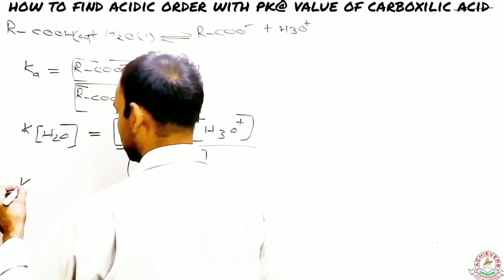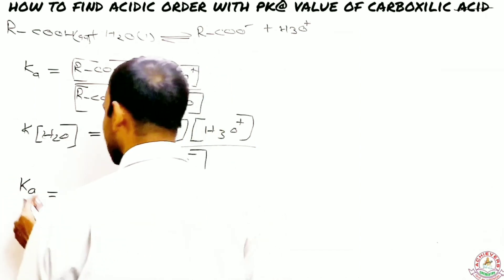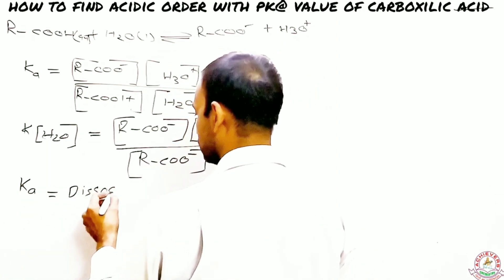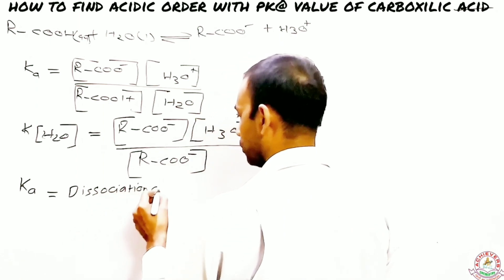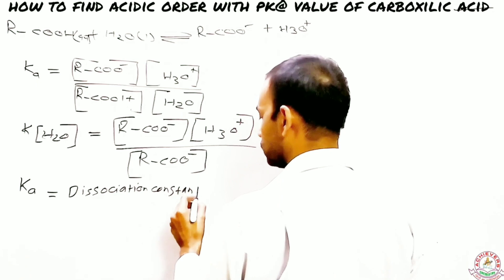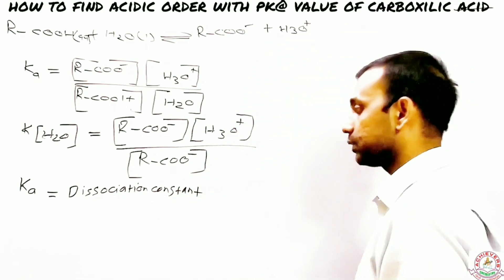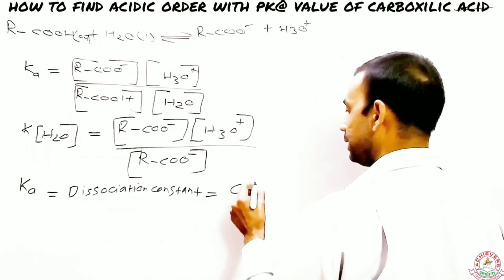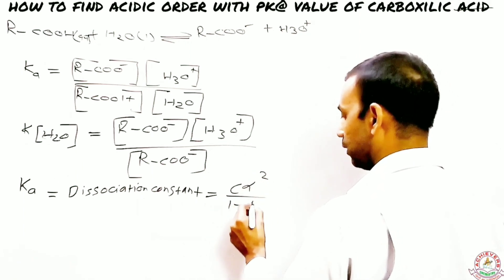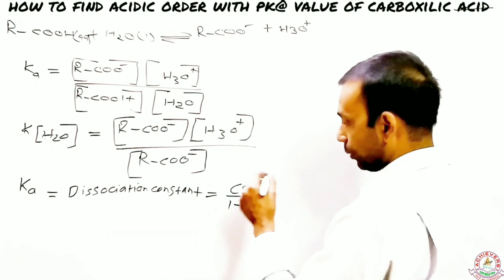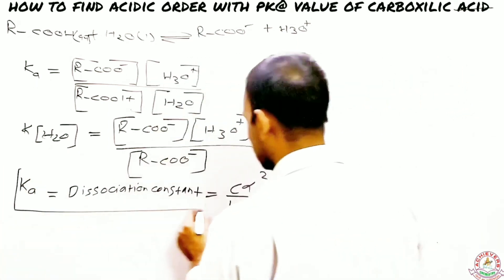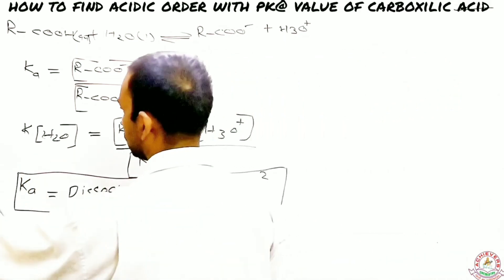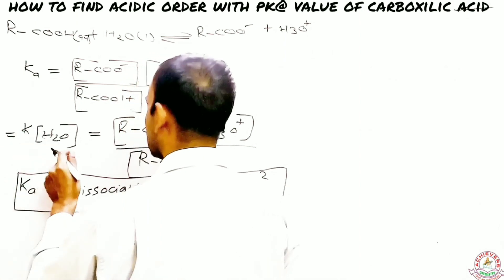This expression is called the dissociation constant of the acid. Ka is related to the degree of dissociation by K = cα²/(1-α), from equilibrium topics covered in Class 11. So Ka equals K·[H₂O], which equals the expression with RCOO⁻ and H₃O⁺ divided by RCOOH.